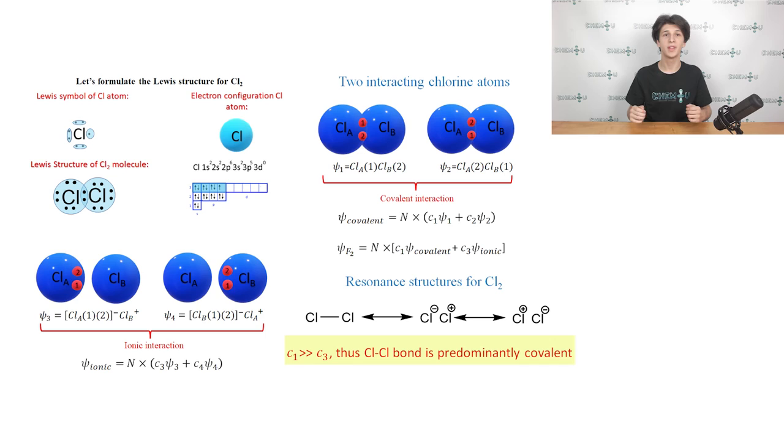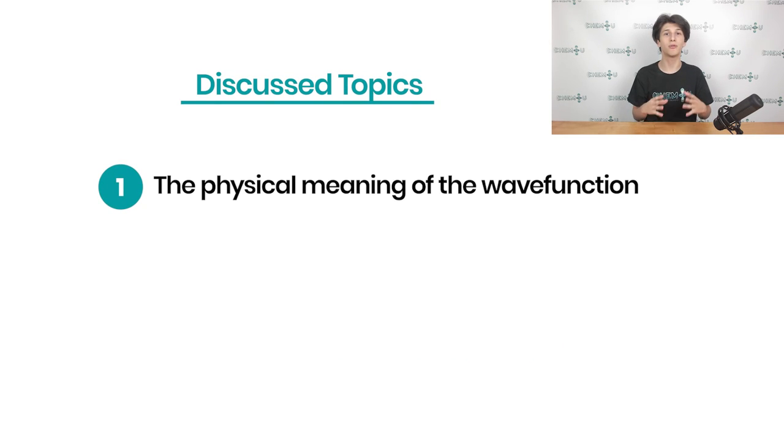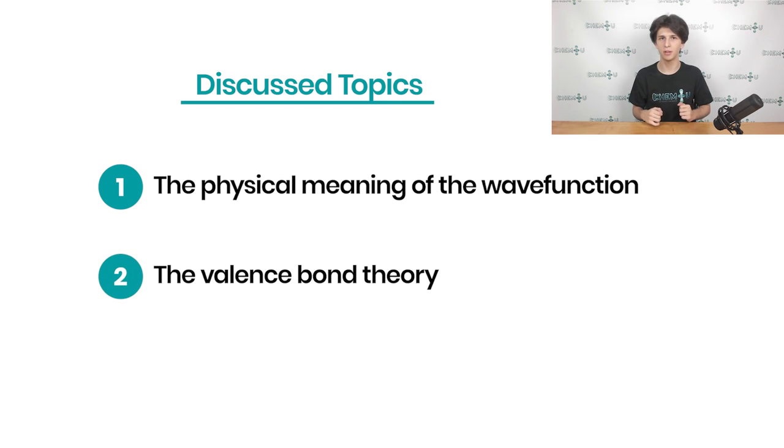That's it for today. This was a brief recap of the foundations of the valence bond theory. The reason for introducing this information to you is that it's quite important to understand the origin and physical meaning of resonance structures. These structures are widely used in organic chemistry to explain the stability of various molecular species and to understand the mechanisms of organic reactions. We've learned a lot today, haven't we? Let's sum up today's video. We started with the physical meaning of a wave function in chemistry. And then we recapped the foundations of the valence bond theory and described several molecules with VB theory.